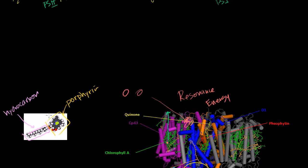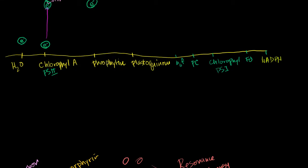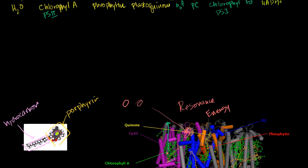When the photon comes in, or when the resonance energy comes in from some of the antenna molecules, electrons in the double bonds sitting here in the porphyrin head get excited — those are the electrons we're talking about. And they get excited. And the first electron acceptor is the pheophytin I just talked about.